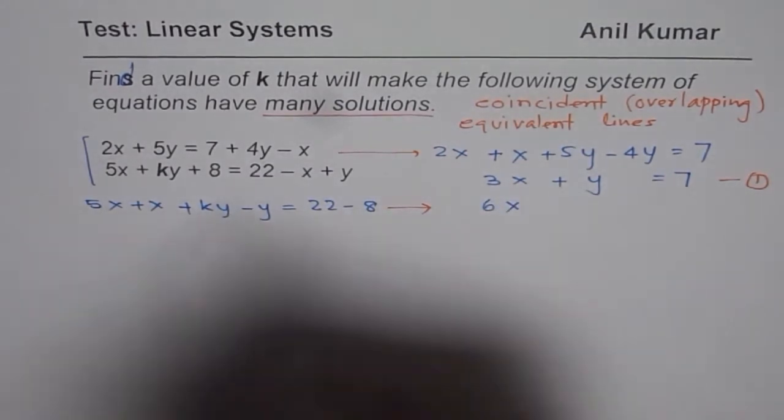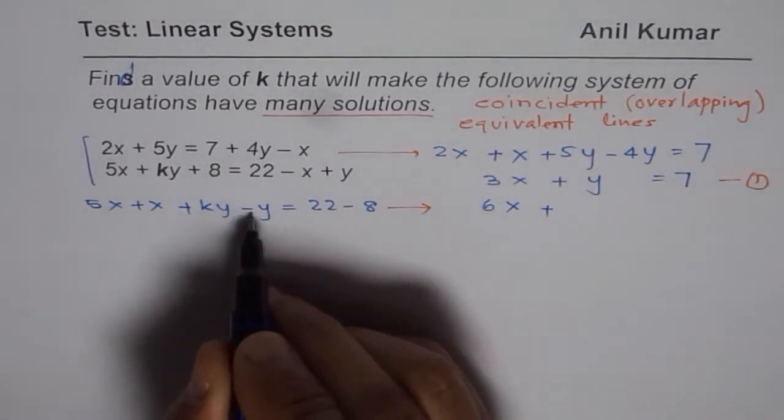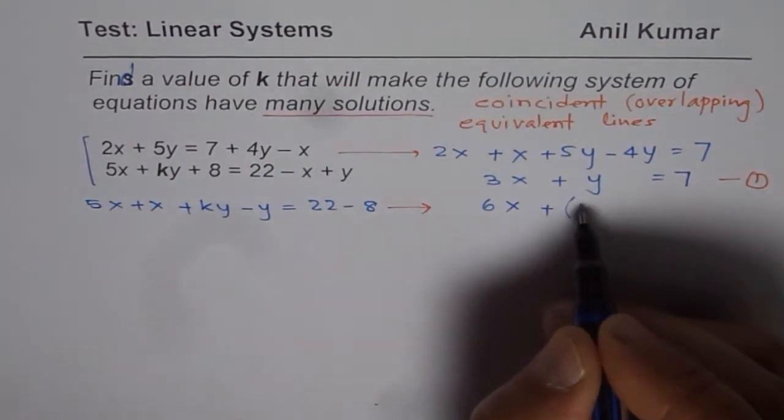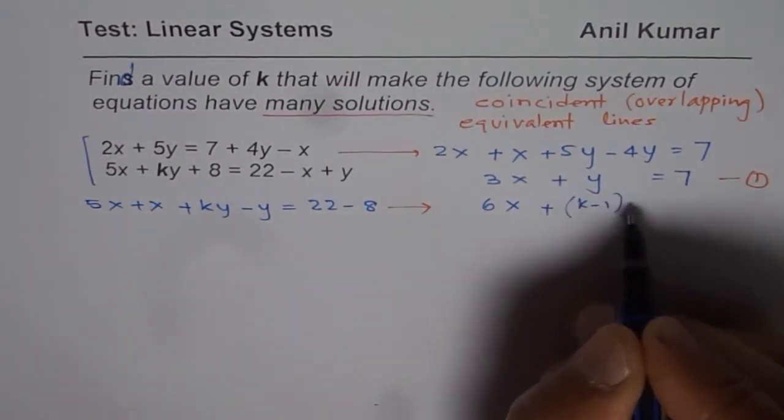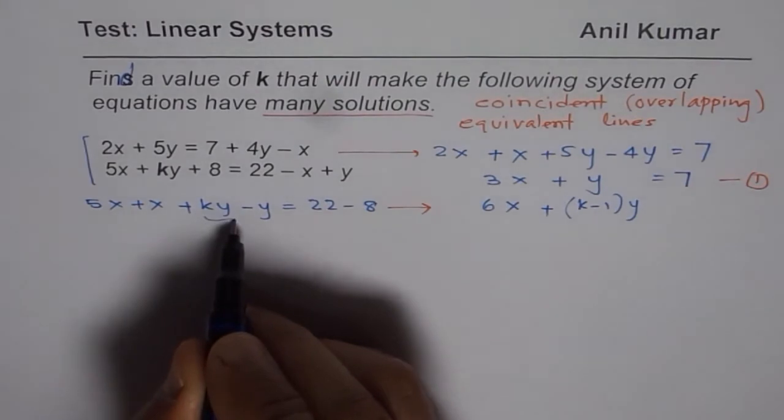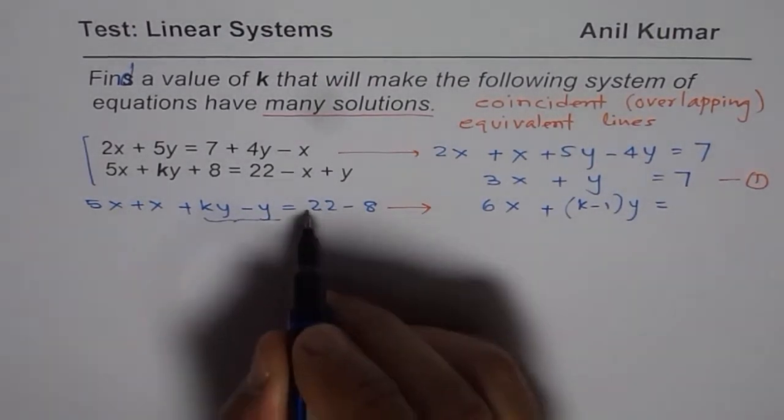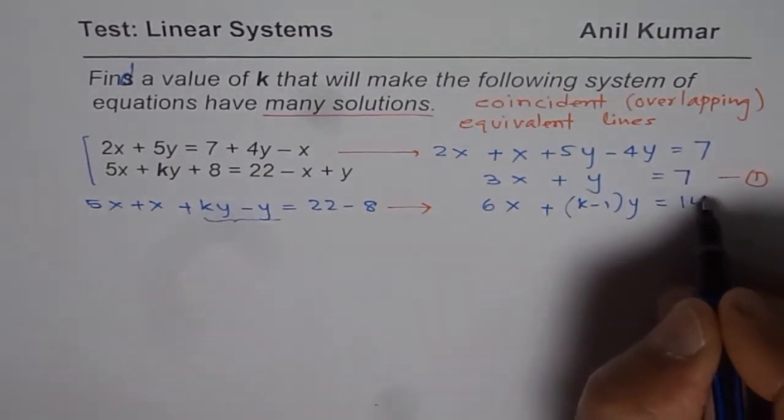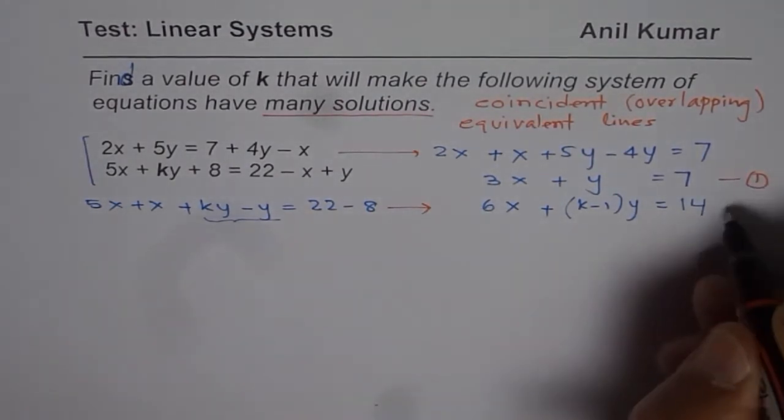...which is 5x plus x is 6x. As far as y is concerned, we can say k minus 1 times y. So we can say k minus 1 times y, or you can write both combined like this. Equals 22 minus 8 which is 14. So you get your second equation.